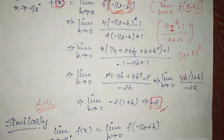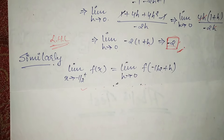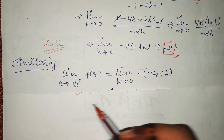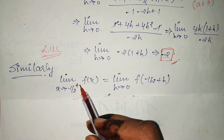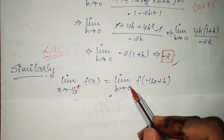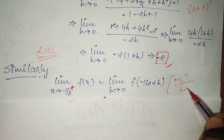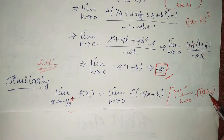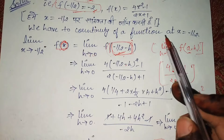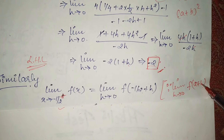For the right hand limit, the format is similar but the notation changes — we use a plus sign. The standard form is: limit h tends to 0, f(a plus h). The difference from the left hand limit is: left hand limit used (a minus h), whereas right hand limit uses (a plus h). Here, a equals minus 1 by 2, so we write f(minus 1 by 2 plus h).